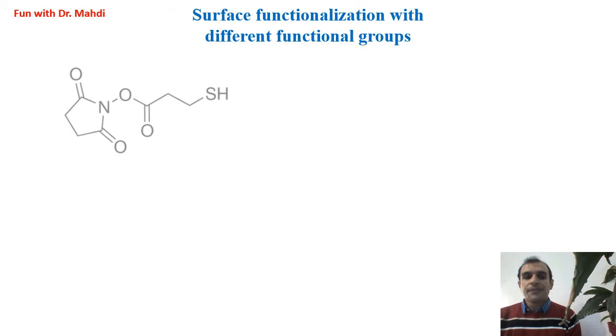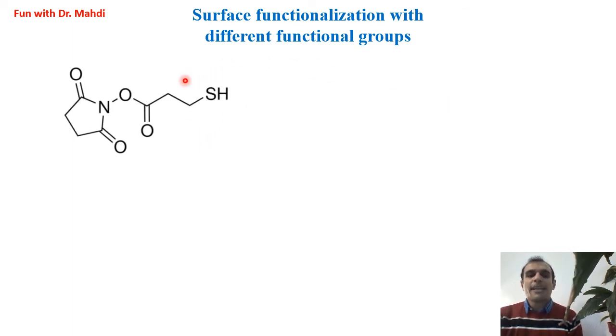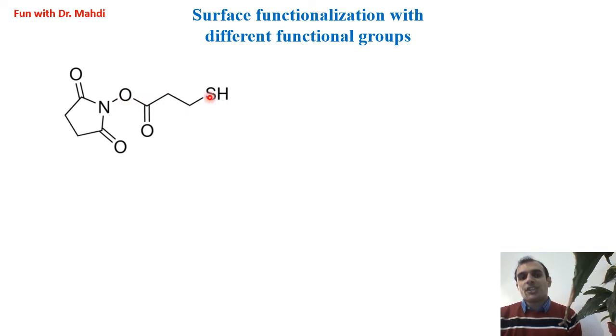For example, R can be thiol. After doing the NHS ester reaction, we can have thiol on the surface.